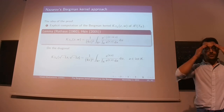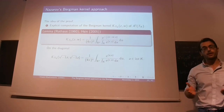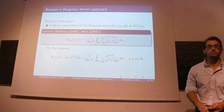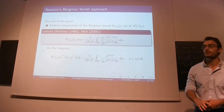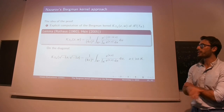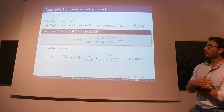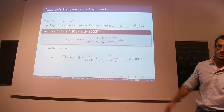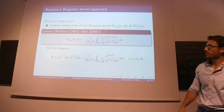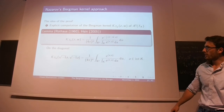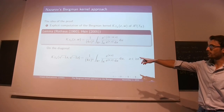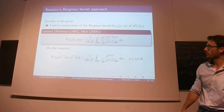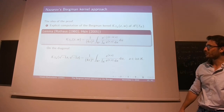Nazarov's proof can be realized in three steps. The first step is that we have a very explicit formula for the Bergman kernels of tube domains. Tk is a tube domain — it's like R^n times K — and by the 60s, and more explicitly in 2005, the formula for the Bergman kernels was explicitly computed. In particular, on the diagonal for A in the interior of K, we get an integral which is a real quantity containing no complex numbers.